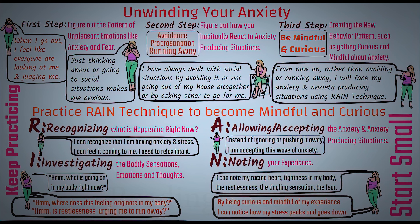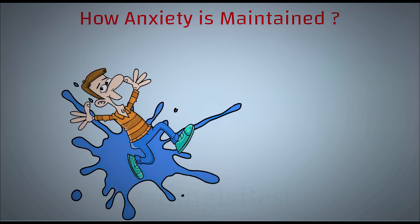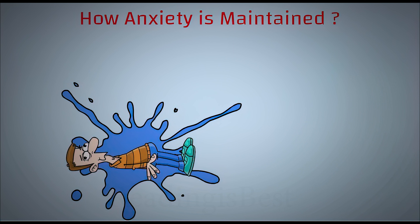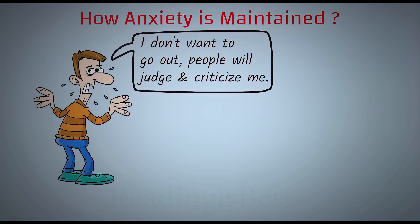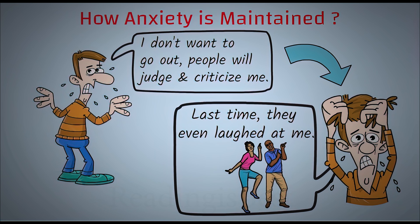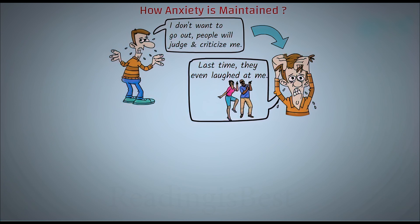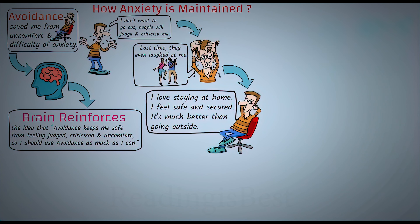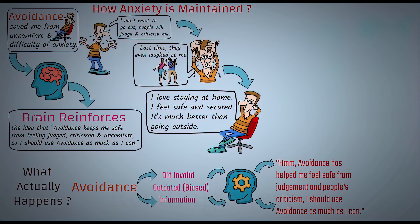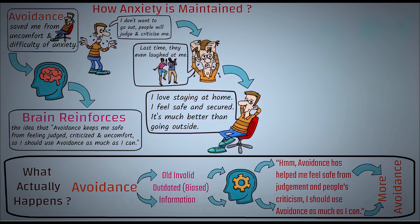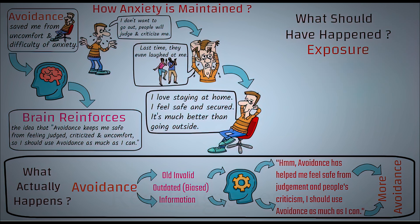Using these three steps combined with the RAIN technique, you can unwind your anxiety and create a new pattern of habit. To understand how this technique works, consider this example. In the past, a person might have slipped and fallen while walking, which led everyone to laugh at him. His mind will use this information to make predictions, saying: 'If I go out, people will criticize me, and if I make even a small mistake, they will judge and laugh at me.' Since that unfortunate incident, he has tried to avoid groups of people. Because of avoidance, his mind won't be able to gather new information about such situations, so it will use the same old distorted information again and again to make distorted predictions, leading to more avoidance.